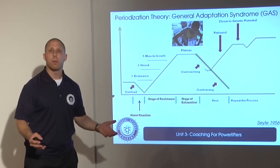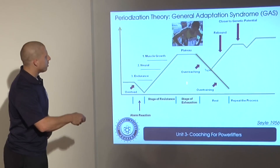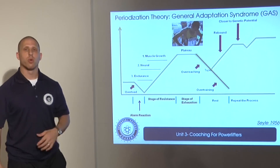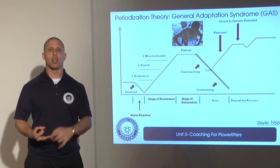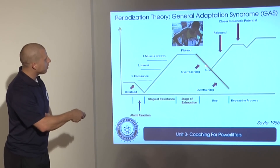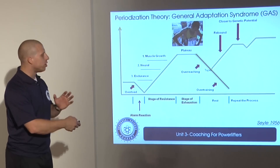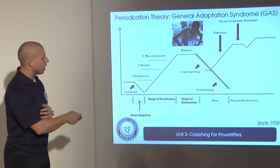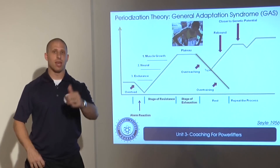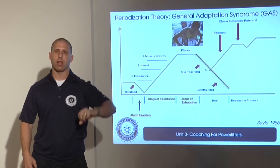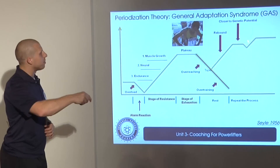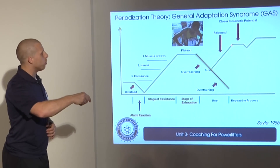Unfortunately, we all hit a plateau at some point, and that's what happens in the stage of exhaustion. To avoid this plateau, we're going to use terms like periodization and taper. But once we hit this plateau, we can continue to train and overreach — overreaching is different from overtraining. If we overreach and then taper — a taper means to decrease volume while maintaining intensity and frequency — we're able to rebound, get supercompensation, and get the most out of our performance.